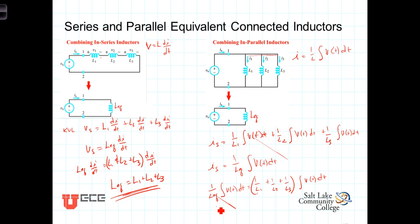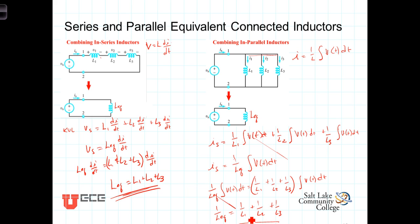Thus, 1 over LEQ is equal to 1 over L1 plus 1 over L2 plus 1 over L3 for a parallel combination of inductances. Again, we'll notice that the math for the equivalent parallel inductances is the same as the math for parallel-connected resistances.